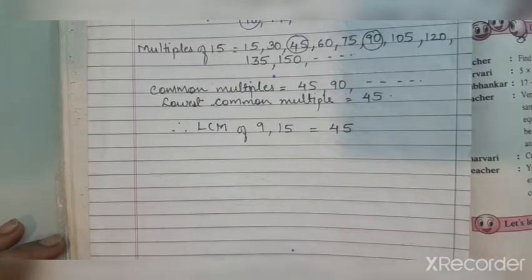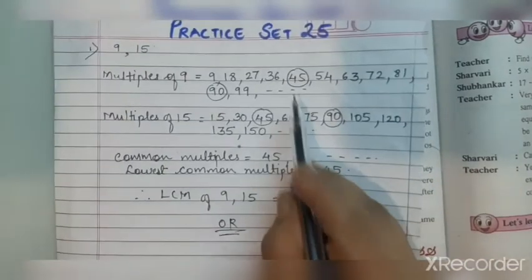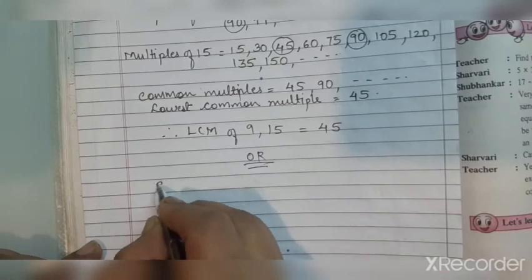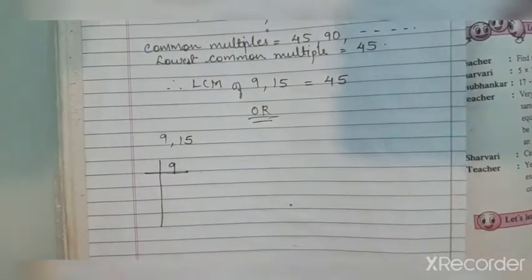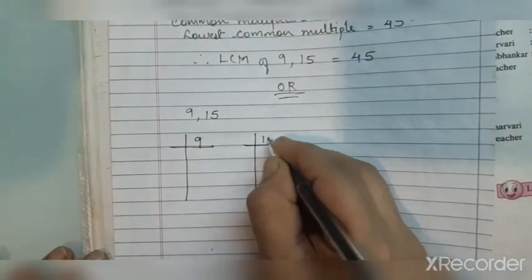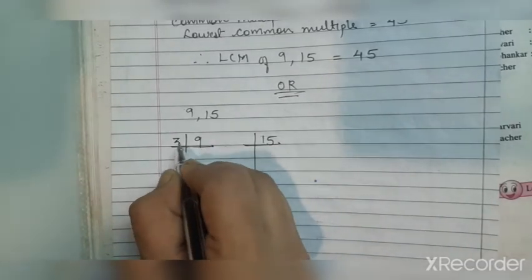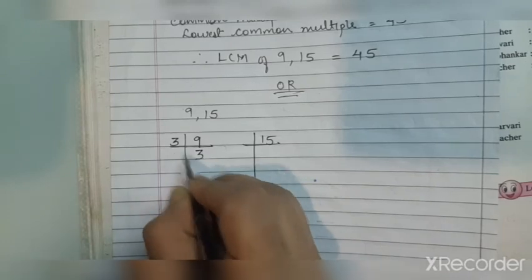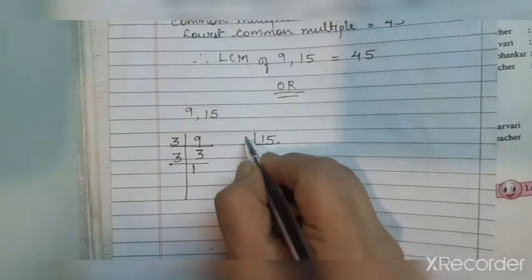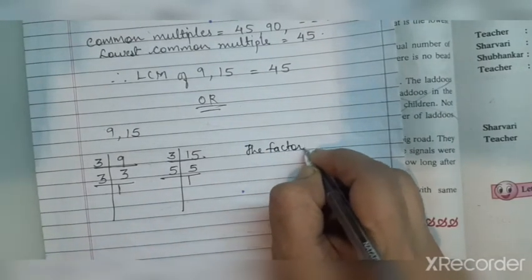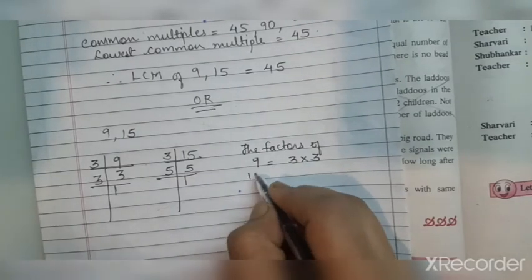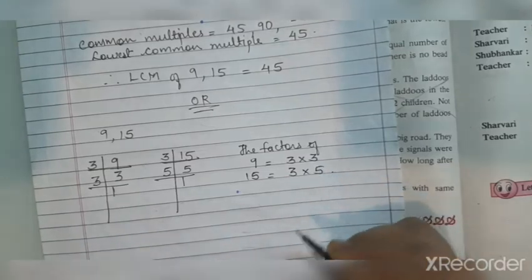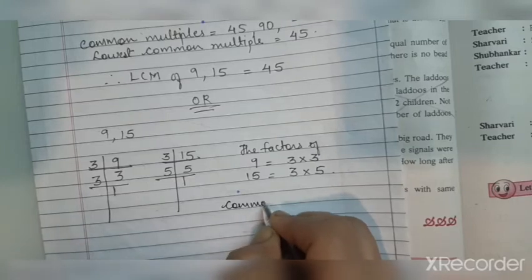The next method is by finding the factors. So either you solve by listing multiples or by the second method — writing the factors — for which we need to find the prime factors, the same method we used for HCF. We take prime numbers. 9 is divisible by 3, so we start with 3: 3 × 3 = 9. For 15: 3 × 5 = 15. The factors of 9 are written as 3 × 3, and the factors of 15 are 3 × 5.